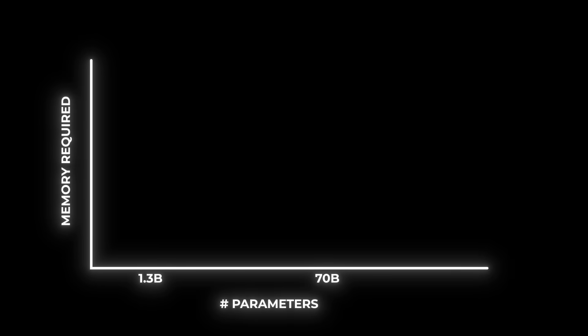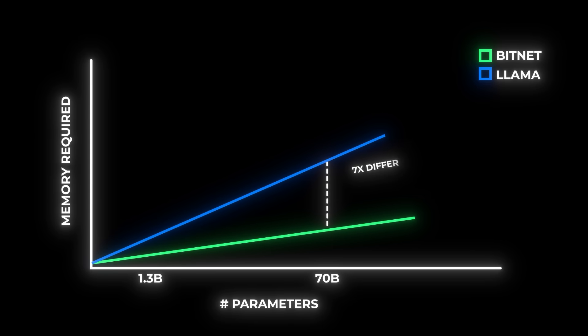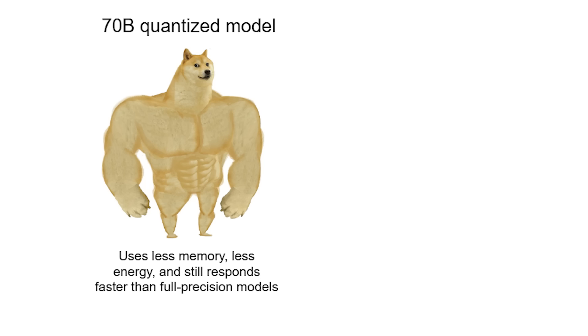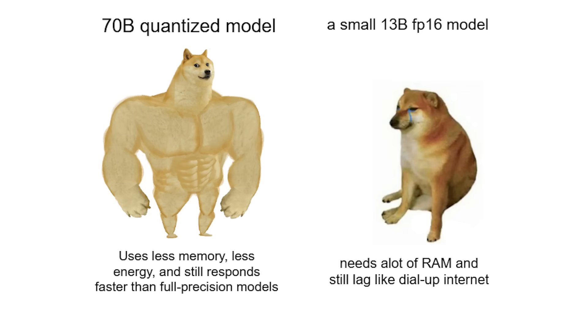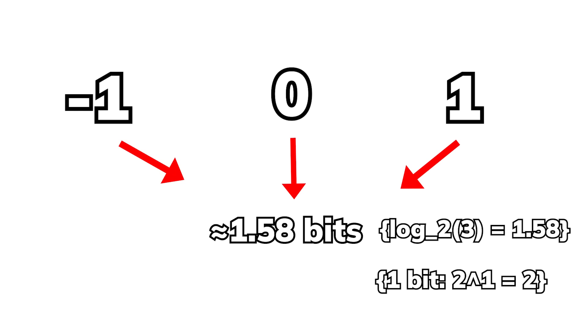As for memory savings, there's a similar trend. When BitNet is scaled up to 70 billion parameters from 1.3 billion, it requires 7.16 times less memory than Llama 70B compared to merely 3 times at 1.3 billion. A 70 billion parameter BitNet B1.58 is still more efficient in generation speed, memory usage, and energy consumption than a 13 billion parameter full-precision LLM. It's called B1.58 because with three states (1, -1, and 0), the information content per weight is now around 1.58 bits.